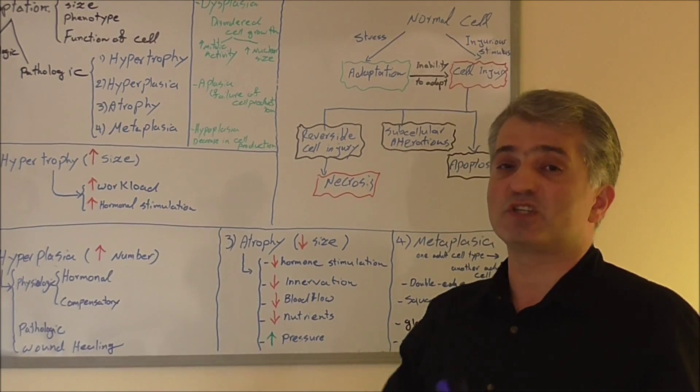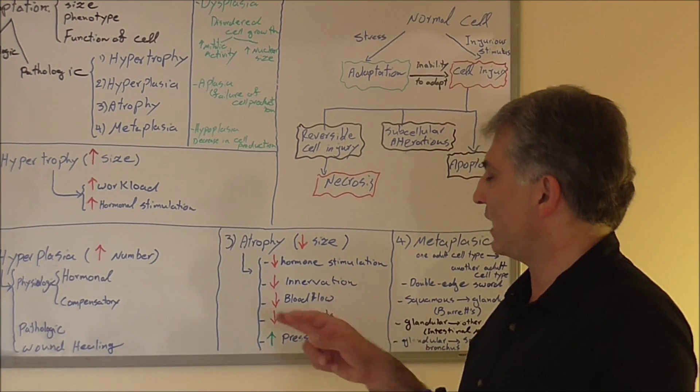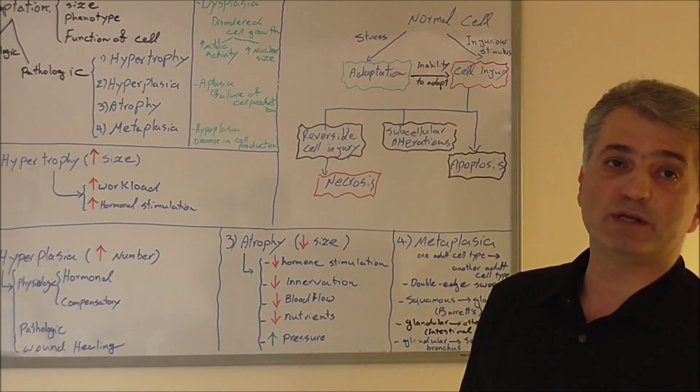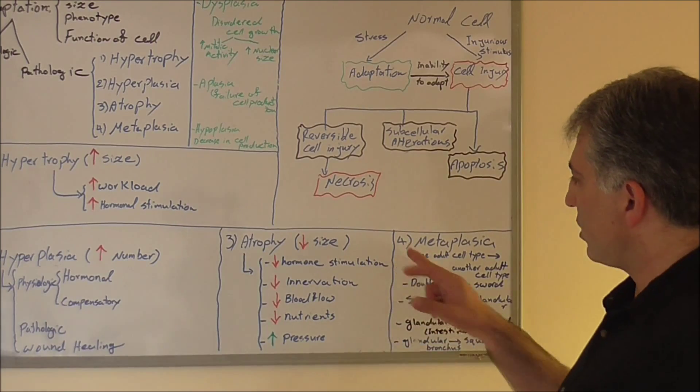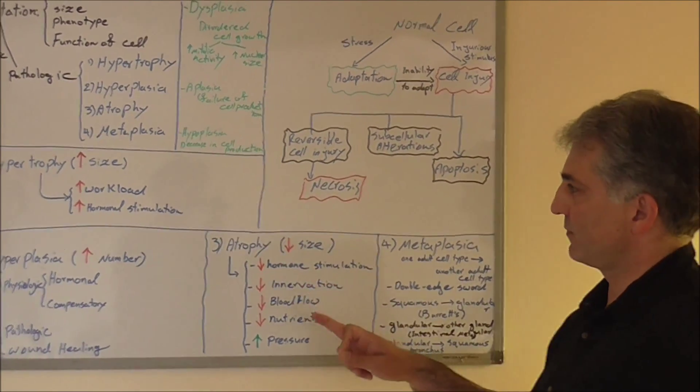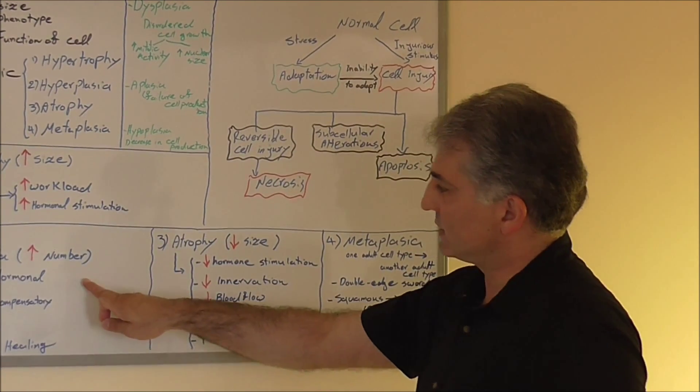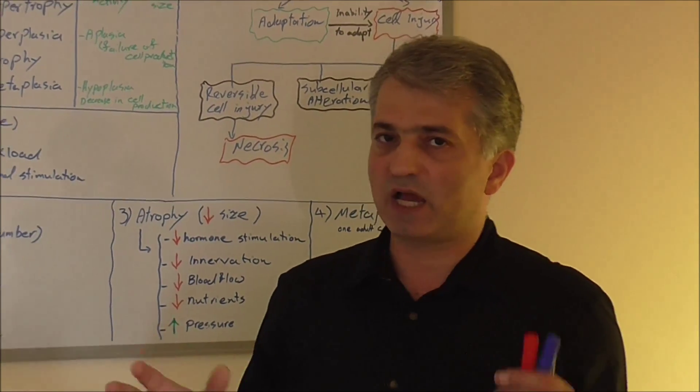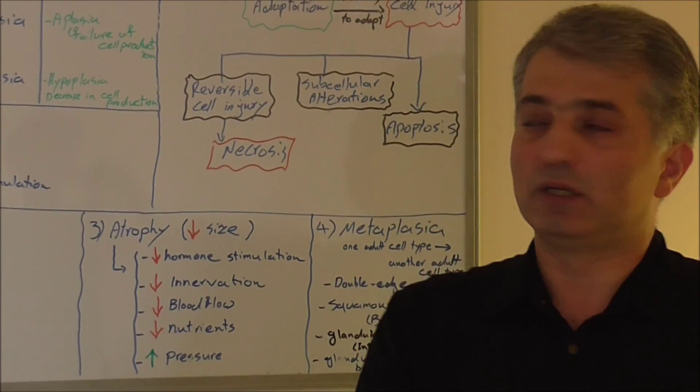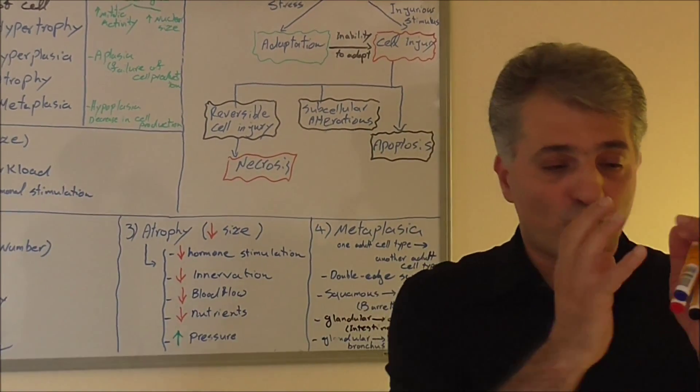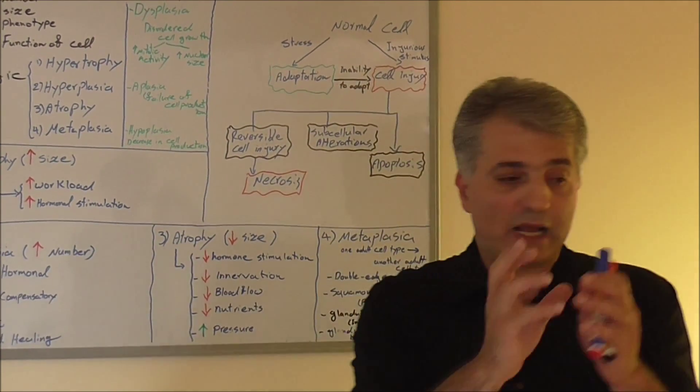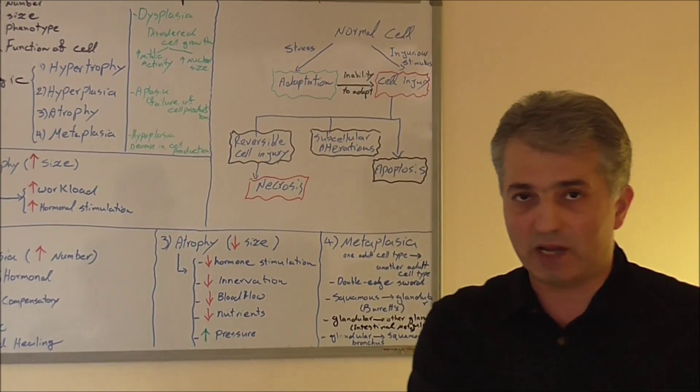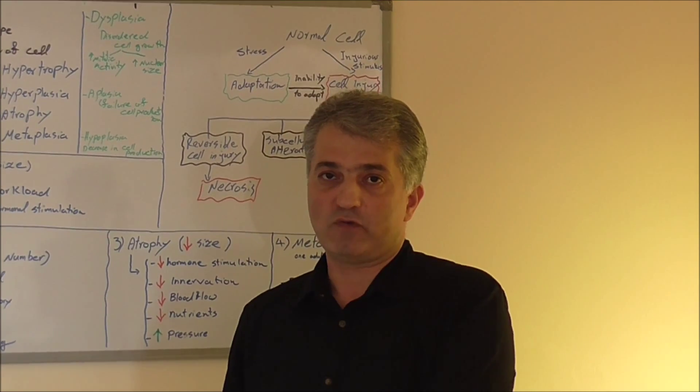Wherever we have too much pressure which somehow affects the blood flow and nutrients of that organ or tissue, we will have atrophy as well. The four types of adaptation so far we've learned: increasing size, increasing number, decreasing size. Metaplasia—this is not about the size or number, it's about changing phenotype, changing from one cell to another cell.